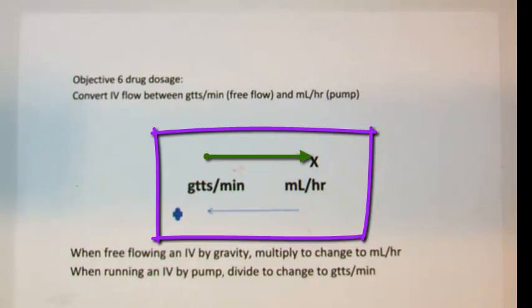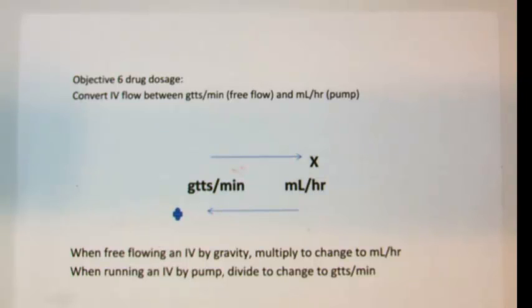A top arrow pointing from left to right, and a bottom arrow pointing from right to left. Notice that when changing from drops per minute to milliliters per hour, the arrow shows that to convert you simply multiply, whereas the opposite action moving milliliters per hour to drops per minute requires division.